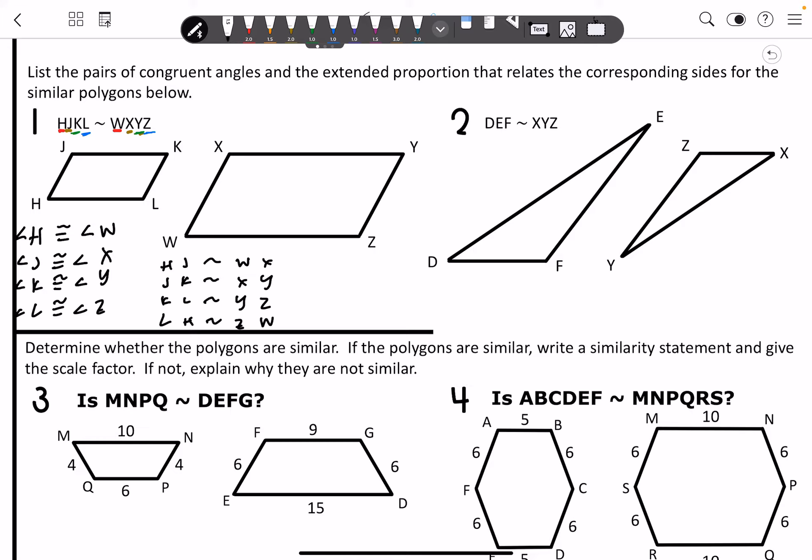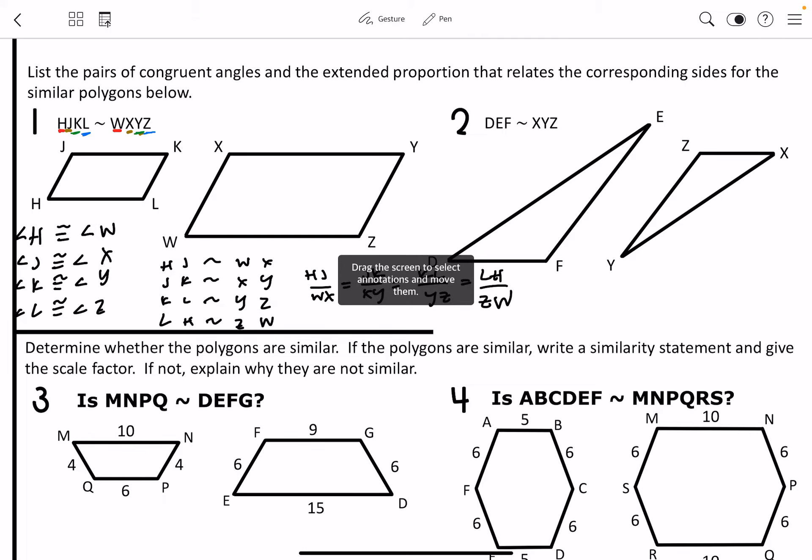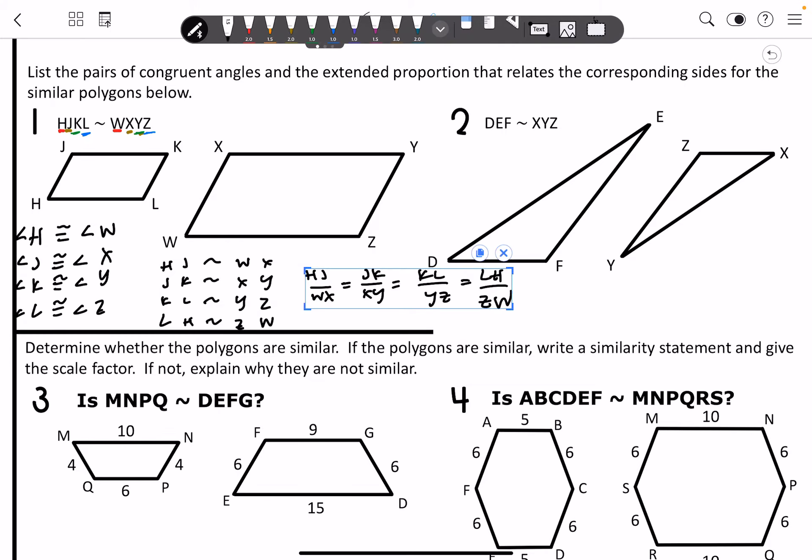Alright. You can use that to write your extended proportions of HJ over WX is equal to JK over XY is equal to KL over YZ is equal to LH over ZW.